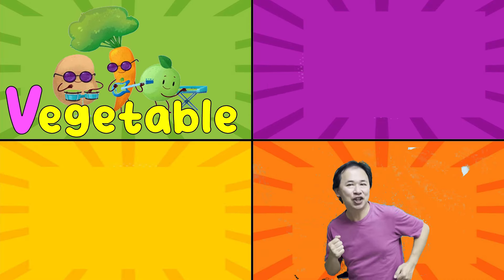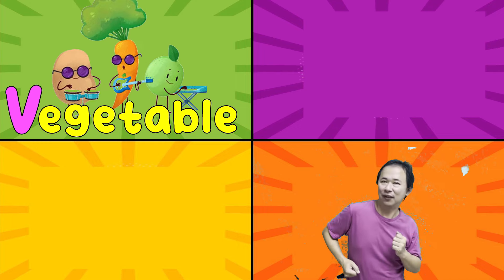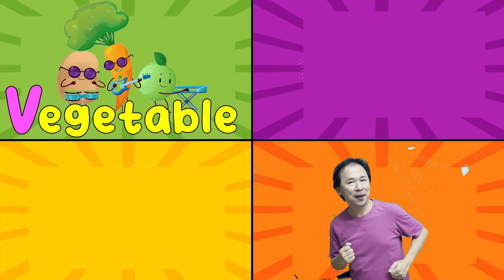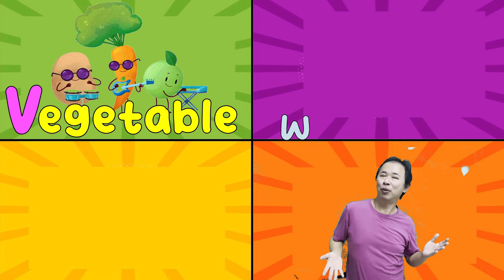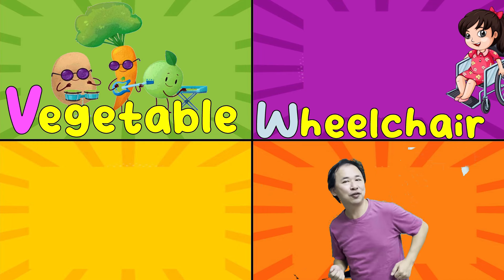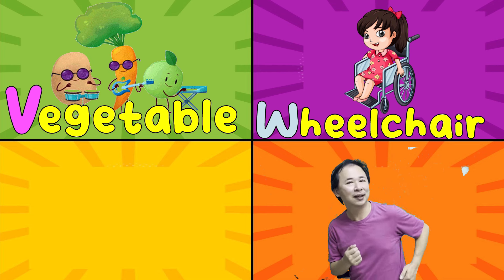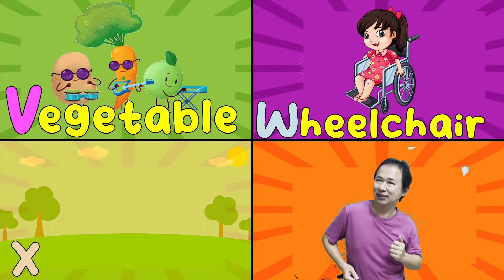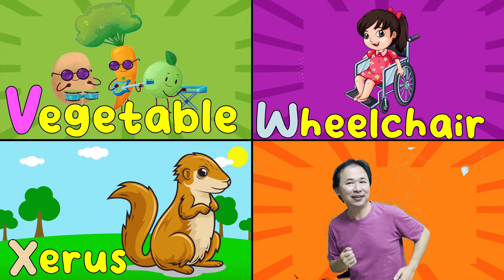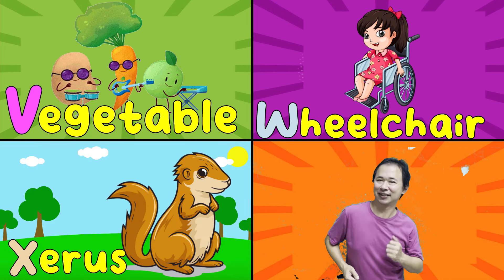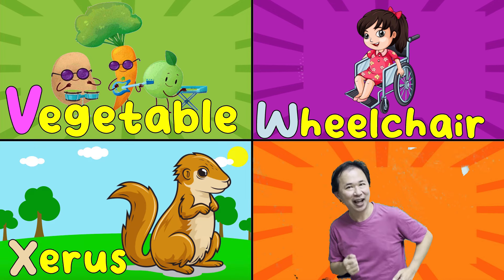V is for vegetables. V, V, V. W is for wheelchair. W, W, W. X is for xylophone. X, X, X.